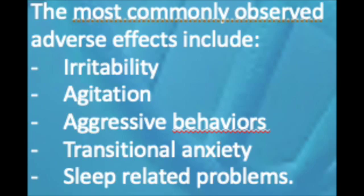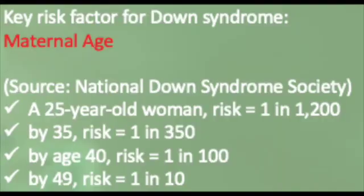There are also some common observed adverse effects in Down Syndrome patients. Normally they experience irritability, agitation, aggressive behavior, transitional anxiety, and sleep-related problems. According to the National Down Syndrome Society, there is only one key factor that causes Down Syndrome, which is maternal age — meaning the age of the mother who conceived or who gets pregnant.